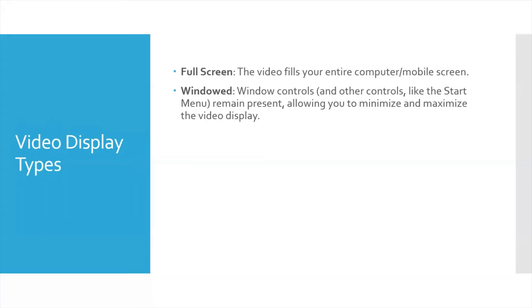With Zoom, you can choose among a bunch of different video display types. There's always full screen, which means the video fills your entire computer or mobile screen. There's also a windowed screen, which means the window controls — like minimize, restore down — are still there, along with other controls like the start menu and taskbar if you're using Windows. So you still have access to some of those window controls while the video is streaming.